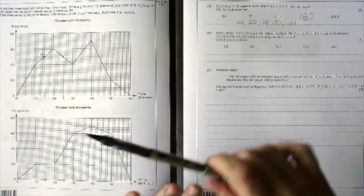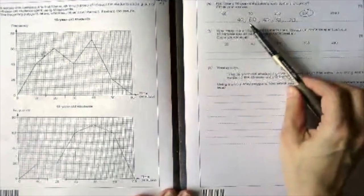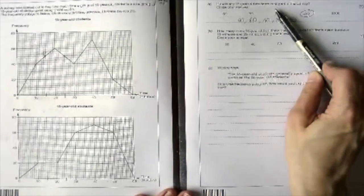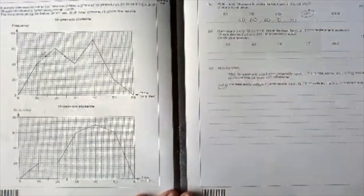Question two is reading some frequency polygons. Part A is already done for us, so it was to find out how many 16-year-old students took part in the survey. I looked at my frequency polygon, did all the points, wrote them down, added them all up to 130.